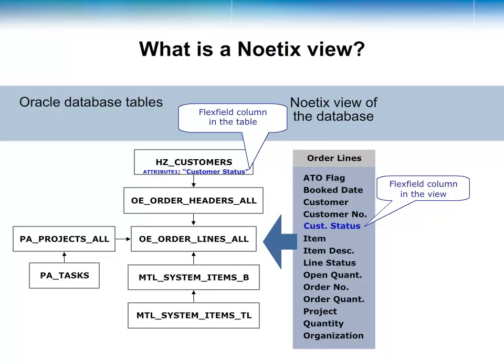Noetics views support many Oracle configuration options, including key and descriptive flex fields. Note how the table column is named attribute 1, but the data it holds is about customer status. The flex field setup information is stored elsewhere in the Oracle database, and Noetics will automatically look up this information and apply it to the column in the view.